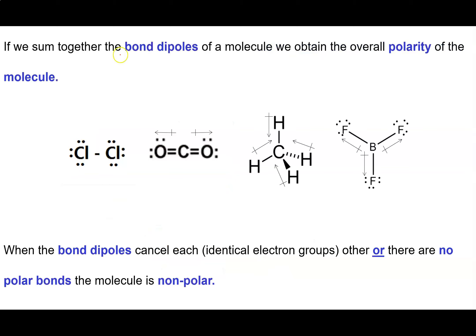So if you add together the bond dipoles of a molecule, you obtain the overall polarity of a molecule. So this chlorine molecule doesn't have a bond dipole because the molecule doesn't have a bond dipole either, so there's no dipole. Now, if we look at this carbon dioxide molecule here, we've got a positive end there and a negative end there. We've got a positive end here and a negative end there.